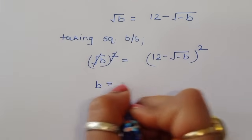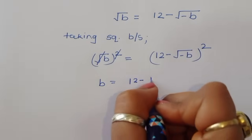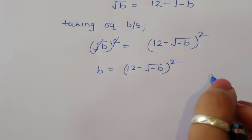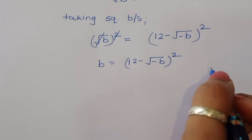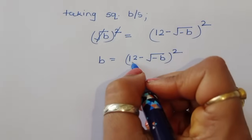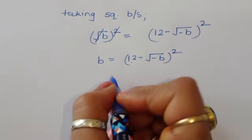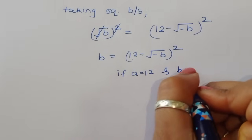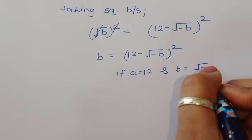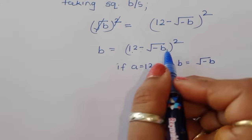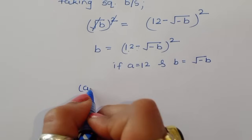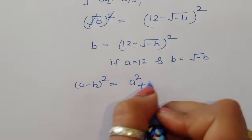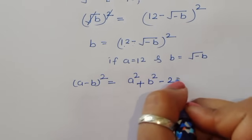The square root and square cancel, so b is equal to (12 minus square root of minus b) whole square. Now this is in the form of (a minus b) whole square, where a is equal to 12 and b is equal to square root of minus b.